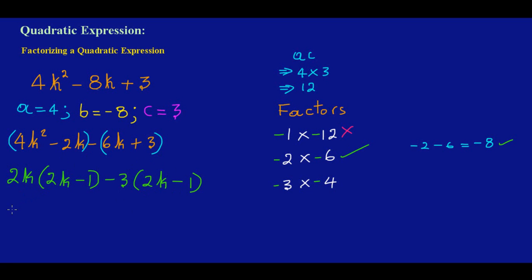So there we go, we have factorized that. Now we need to group. I'm going to collect my terms on the outside which is 2k and this minus 3 here, put that in a bracket, and I'm just going to rewrite what's inside one of the brackets: I have a 2k minus 1 inside the bracket, and that's my answer.